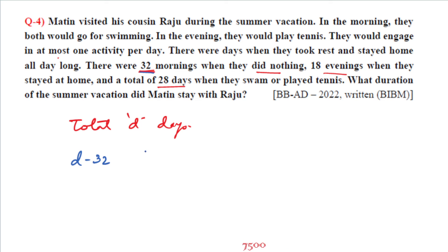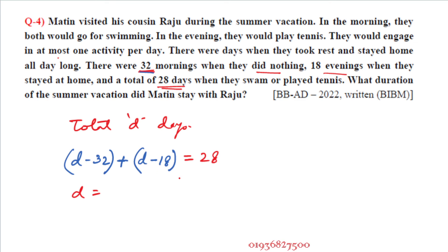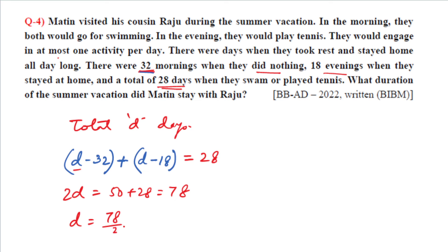Setting up the equations: total evenings with no activity equals d minus 18; morning activity equals d minus 32; evening activity equals d minus 18. Adding morning and evening activities together equals 28 days of swimming or tennis. So d minus 32 plus d minus 18 equals 28. Therefore 2d equals 32 plus 18 plus 28, which is 78. So d equals 78 divided by 2, which is 39 days.